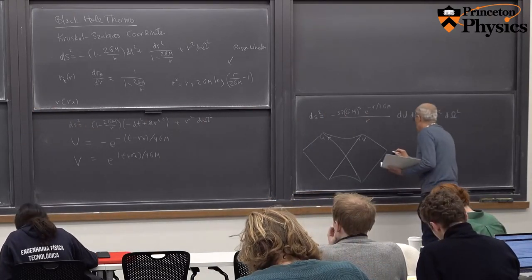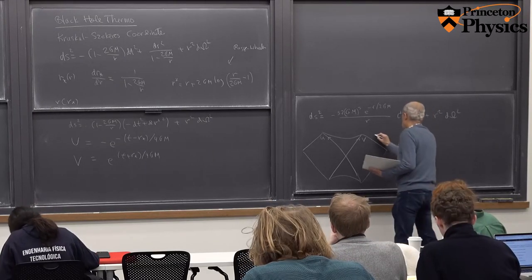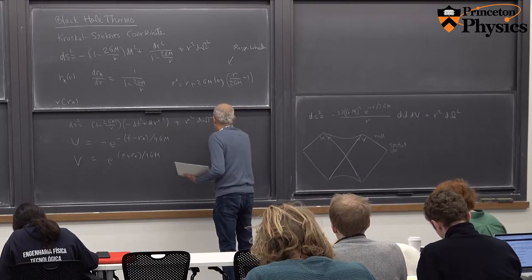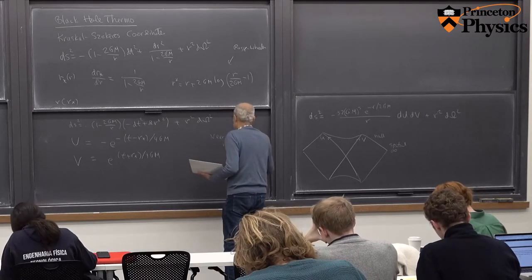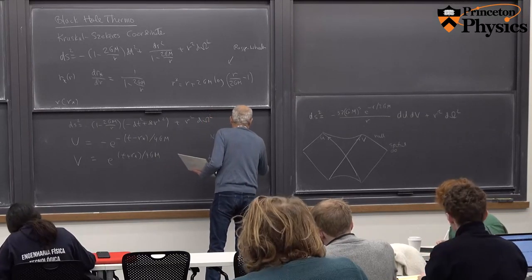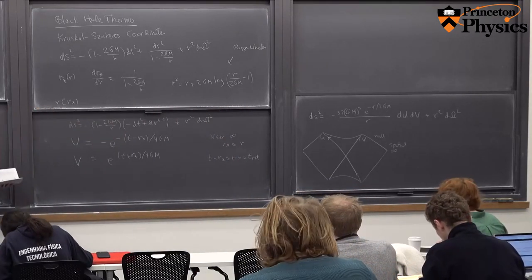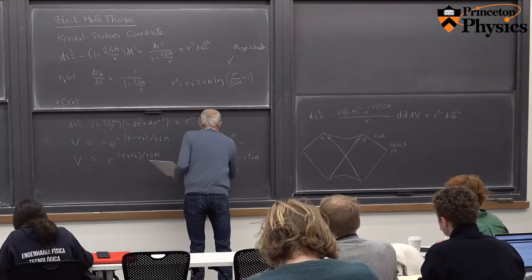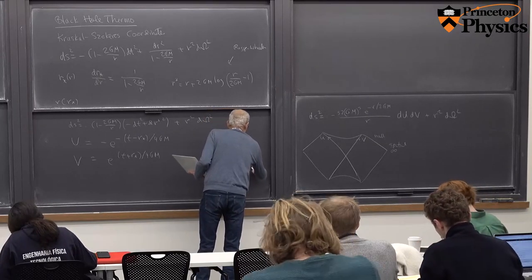These formulas are very complicated in the interior, but near infinity r-star is the same as r. Therefore, t minus r-star is what's called the retarded time in books on electromagnetic radiation or scattering theory, and t plus r-star is approximately the same as t plus r, which is the advanced time.